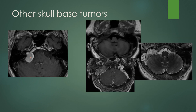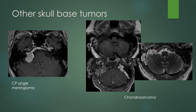Other skull-based tumors: this is a homogeneously enhancing dural-based mass with a dural tail at the cerebellar pontine angle — classic location and appearance for a CP angle meningioma. This less common tumor is hyperintense and bubbly on T2-weighted imaging at the petrous apex in the mastoid bone. It is hypointense on T1 and shows heterogeneous enhancement. This is the location and appearance for a chondrosarcoma — that bubbly T2 expansile mass at the level of the petroclival ligament, where there is cartilage lining.